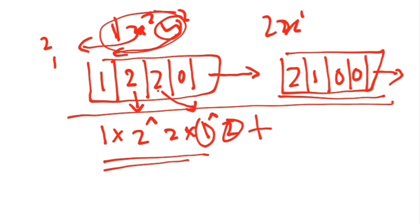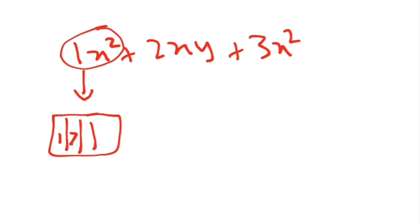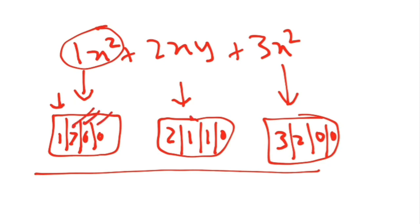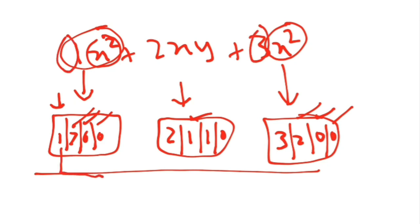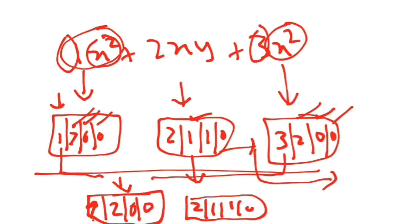To add two polynomials, suppose the two given are 1x² + 2xy and 3x². You represent both as linked lists. Then you compare the exponents of each term. If exponents match — for example, both have x² with exponent 2,0,0 — you add the coefficients (3+1=4) and store in a new node with the same exponents. Terms with no matching counterpart are carried over as-is. In this way you add the polynomials.